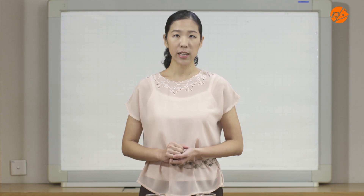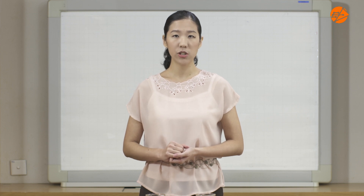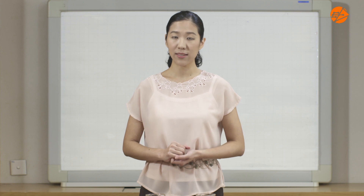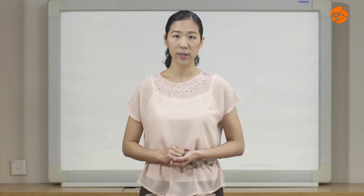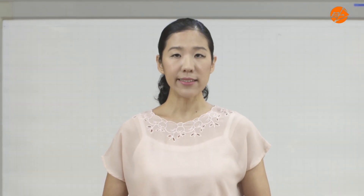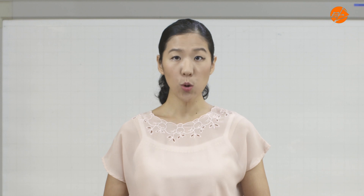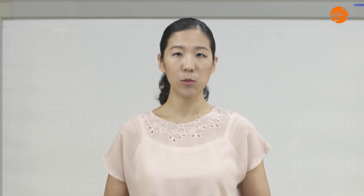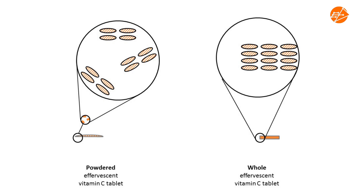For the key reaction to occur, citric acid must first dissolve in water to form hydrogen ions. So let's focus on the reaction between citric acid and water. To simplify things a little, let's imagine that the whole tablet is made up only of citric acid. Let's zoom in to see the arrangement of the particles in the tablet and in the powder.